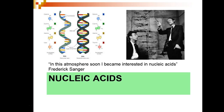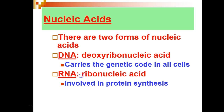Nucleic acids are a unique group of macromolecules found in the nucleus and ribosomes of eukaryotic cells and in the nucleoid and ribosomes of prokaryotic cells. There are two forms of nucleic acids: deoxyribonucleic acid, or DNA,